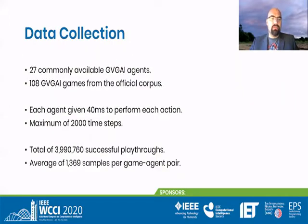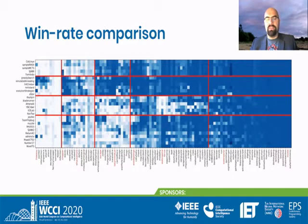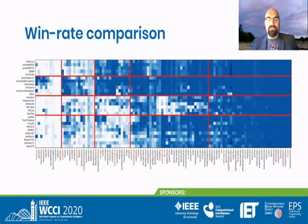What we did was take the 27 commonly available GVGAI agents — several of them past competition winners, some of them just sample implementations of very basic algorithms such as A*. And we took all 108 GVGAI games from the official corpus. Taking all this data, we can create a chart where the win rate is shown for every AI and every game we've tested. You immediately see that there are some games where the AIs nearly always win, like those very much on the right, and then there are some games where nearly all AIs always lose — and those are probably less interesting as they offer less insight, being just so hard that no AI is actually doing anything.